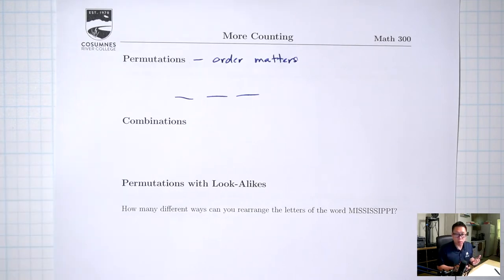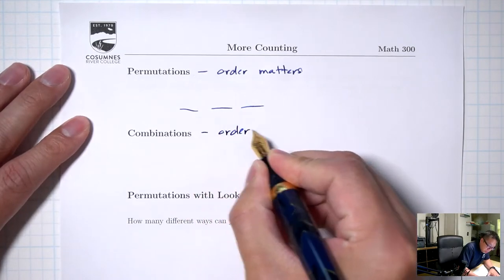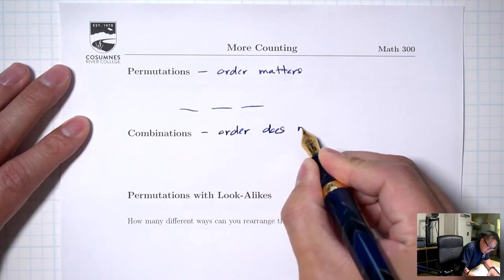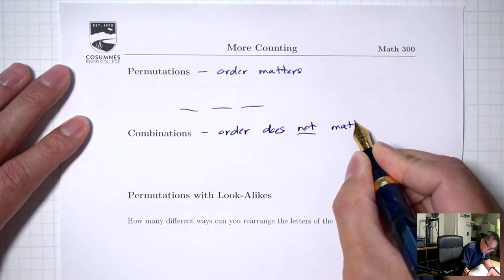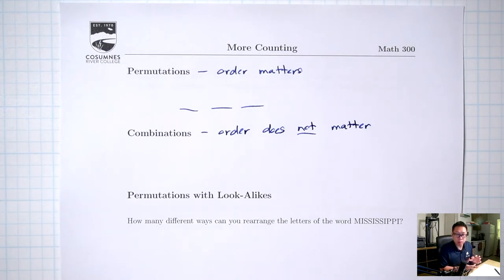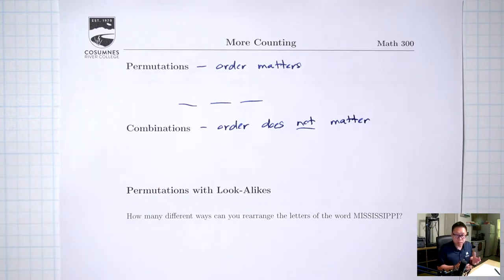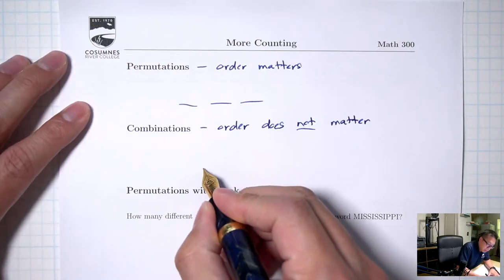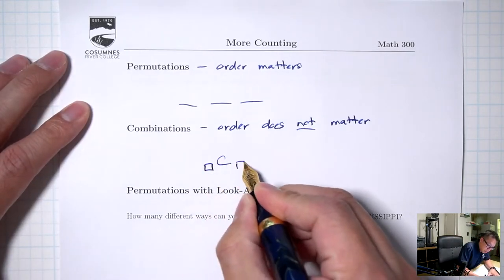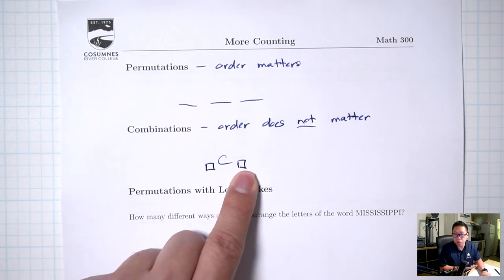Combinations are situations where the order does not matter. A common example of this was picking a team of five people, where you don't have different or special jobs for the five people — you're just picking a team. For combinations, the final answer is going to be something choose something: the total number of items you have to choose from, and then how many you're choosing.